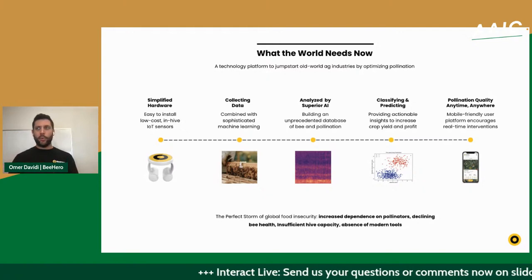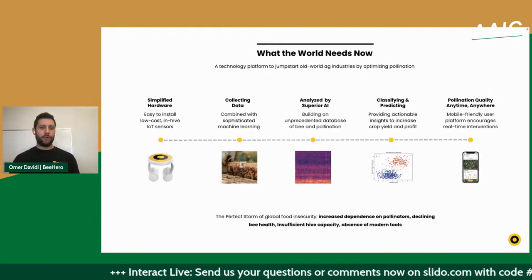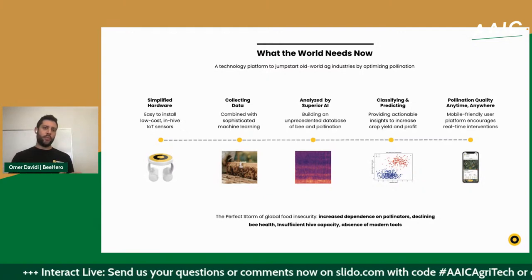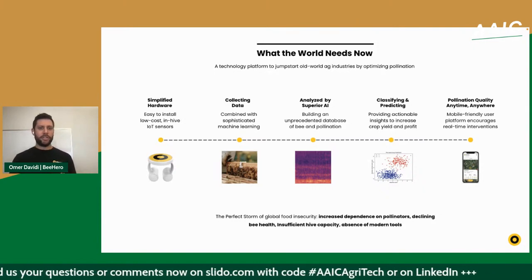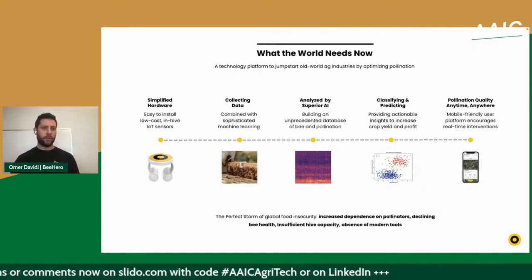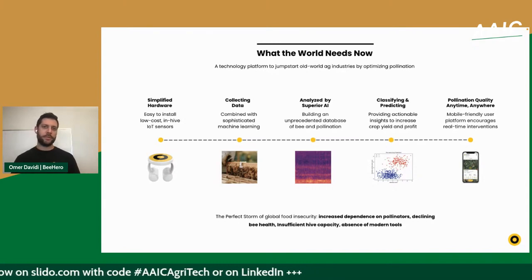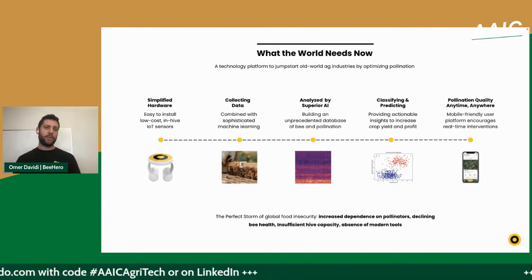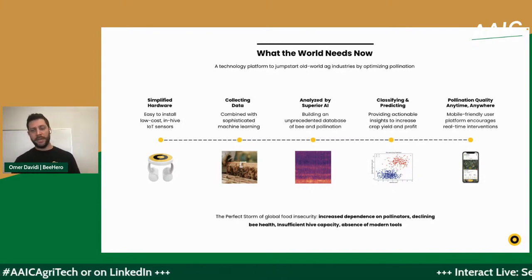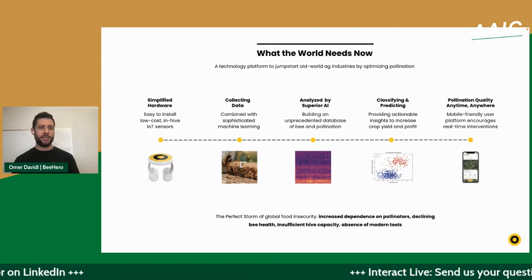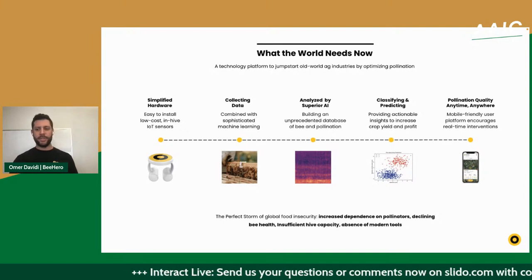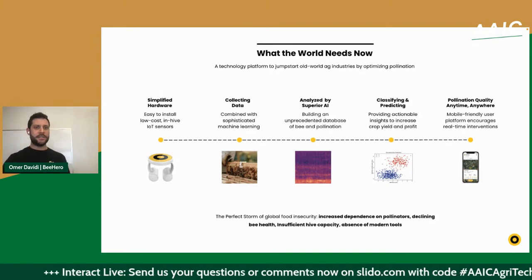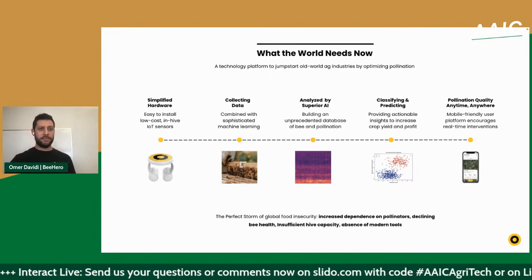One of our key efforts was not to focus on only one side of the equation. We have a technology that can help beekeepers improve hive quality, but we also have technology that can help better strategize pollination needs. So we want to build a holistic solution that addresses both beekeepers and farmers.